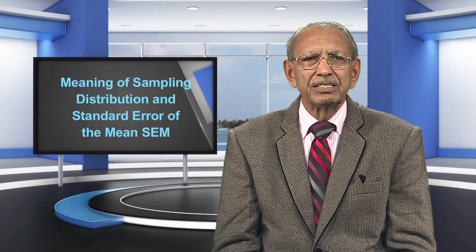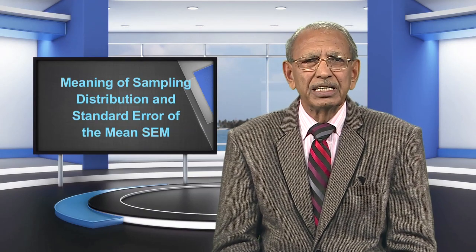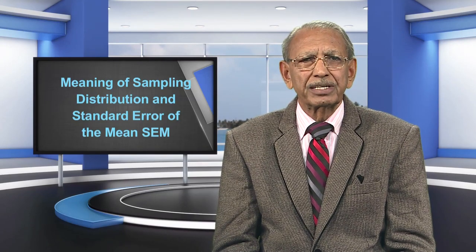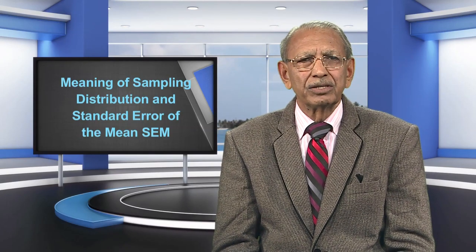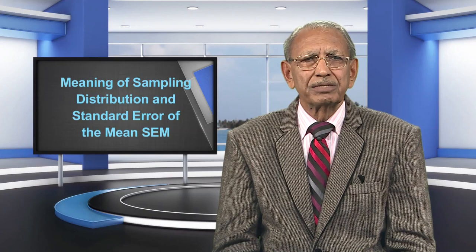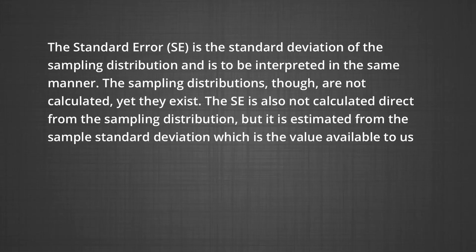The smaller the sample, the more the form of distribution of the population affects the form of distribution of the means. It is important to have knowledge of the form of sampling distribution of a statistic before we can draw any inferences from it about the parameters. This warrants the use of theoretical mathematical distributions like binomial, normal, Poisson, and hypergeometric. However, in educational and psychological data, the normal distribution generally provides a good fit, and hence the standard error is the standard deviation of the sampling distribution, to be interpreted in the manner as we interpret the standard deviation. The sampling distributions, though not calculated, do exist, and the SE is estimated from the sample standard deviation.